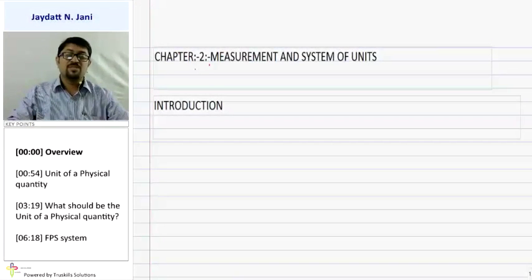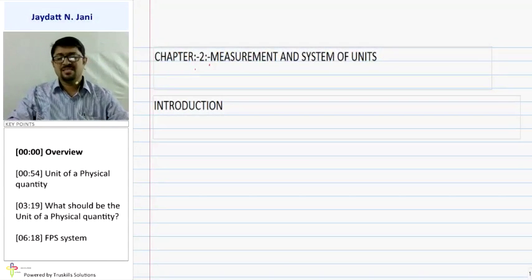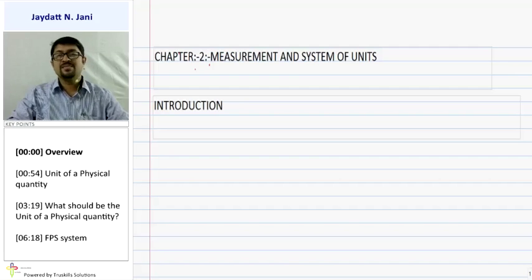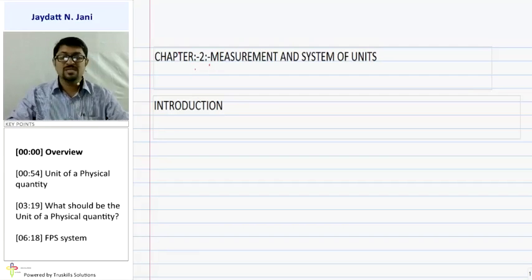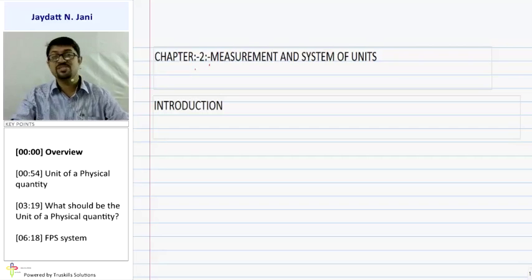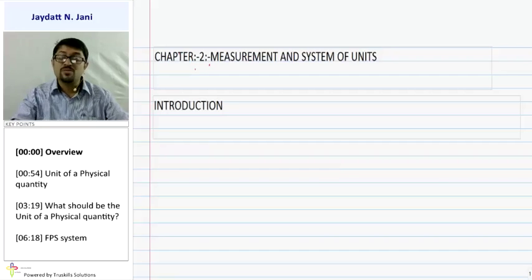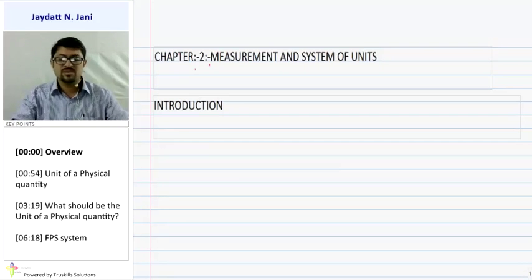Today we are going to learn about Chapter 2: Measurement and System of Units of Semester 1. Basically in this chapter we are going to study about how we can measure different kinds of quantities. In physics we have 7 fundamental quantities and the rest are considered as derived quantities. We will also look at dimensions, dimensional formula, how to measure long distances, very small objects, tiny particles in terms of mass, time, and more.